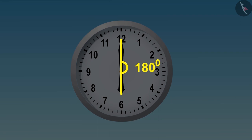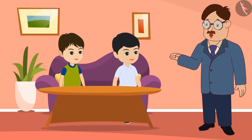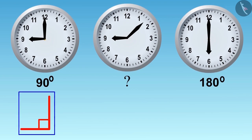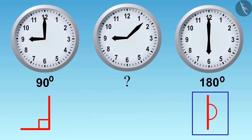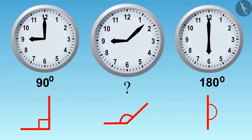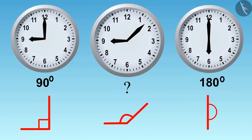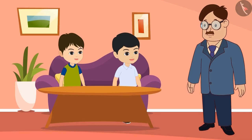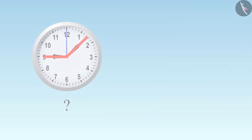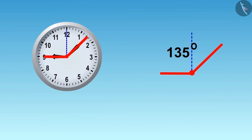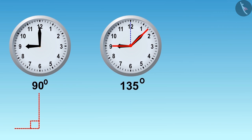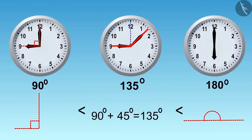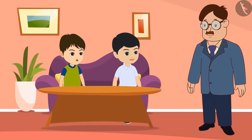That means this angle is made by joining two 90 degrees. Yes, Golu. Children, now you have seen angles of 90 and 180 degrees. Can you tell how many degrees this angle makes by looking at it? It looks like greater than 90 degrees and less than 180 degrees. You identified it correctly, Golu — this is an angle of 135 degrees, greater than 90 degrees but less than 180 degrees. How easy it is to identify angles in the clock!